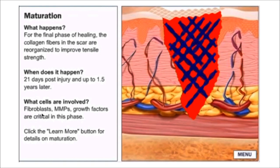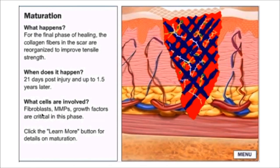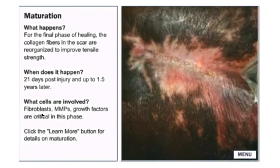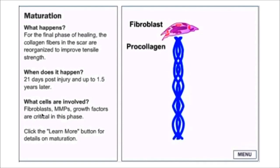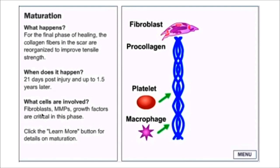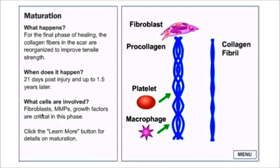Collagen synthesis begins with fibroblasts, which secrete pro-collagen. Growth of pro-collagen fibers is a complicated process; macrophages and platelets are key growth factors in pro-collagen development. Pro-collagen fibers mature into collagen fibrils, which link together into a very strong rope-like collagen fiber. There are about 10,000 fibrils interconnected within a single collagen fiber. Research is currently underway to determine the mechanical details associated with collagen synthesis.